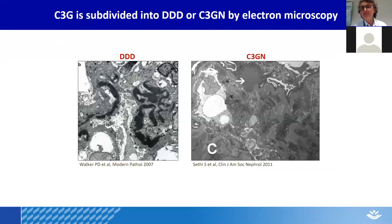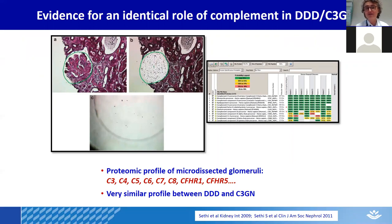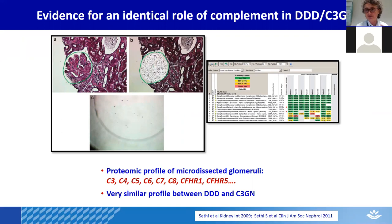Both of these forms are complement-mediated. Important research performed at the Mayo Clinic demonstrated this convincingly — they took all of the proteins within a glomerulus from a patient with DDD and from a patient with C3GN and looked at the composition of proteins deposited within the GBM. What they saw was that in both forms there was a great abundance of complement, pointing to the fact that the driver of disease is the same in these two forms and that it is correct to classify both DDD and C3GN as C3 glomerulopathy.